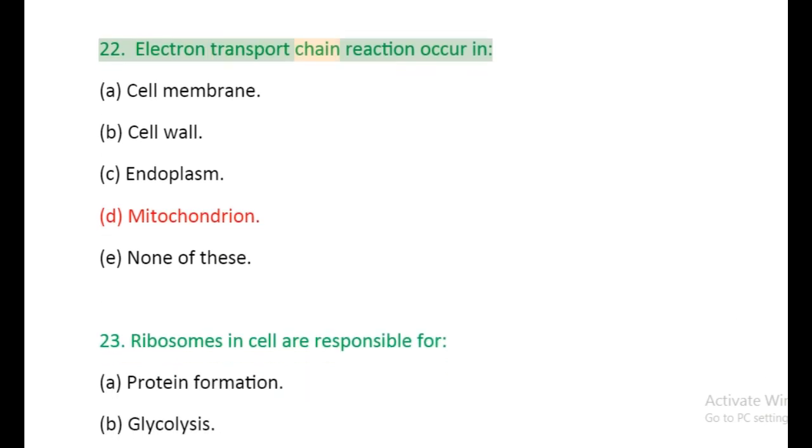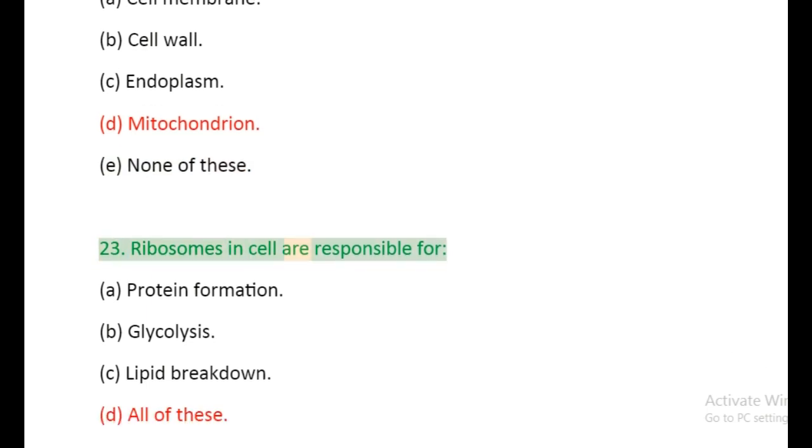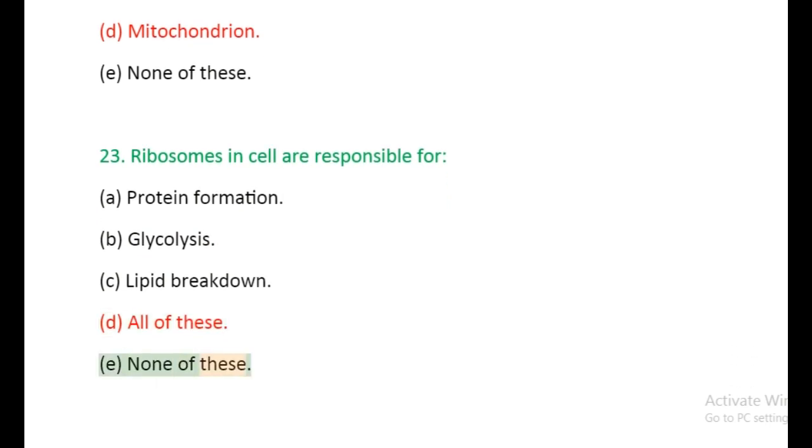Question 22: Electron transport chain reaction occurs in: (a) Cell membrane, (b) Cell wall, (c) Endoplasm, (d) Mitochondrion, (e) None of these. Question 23: Ribosomes in cell are responsible for: (a) Protein formation, (b) Glycolysis, (c) Lipid breakdown, (d) All of these, (e) None of these.